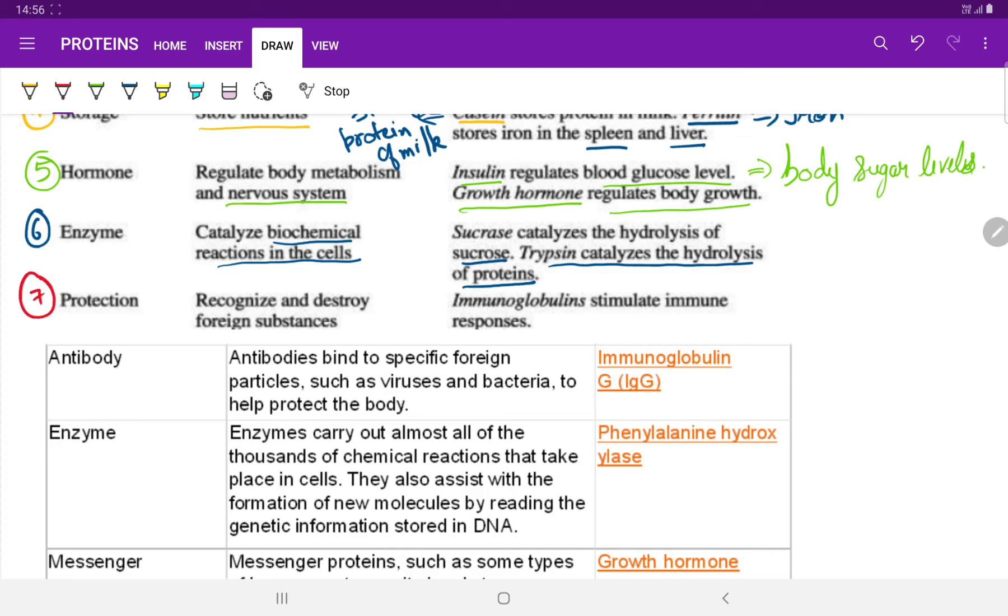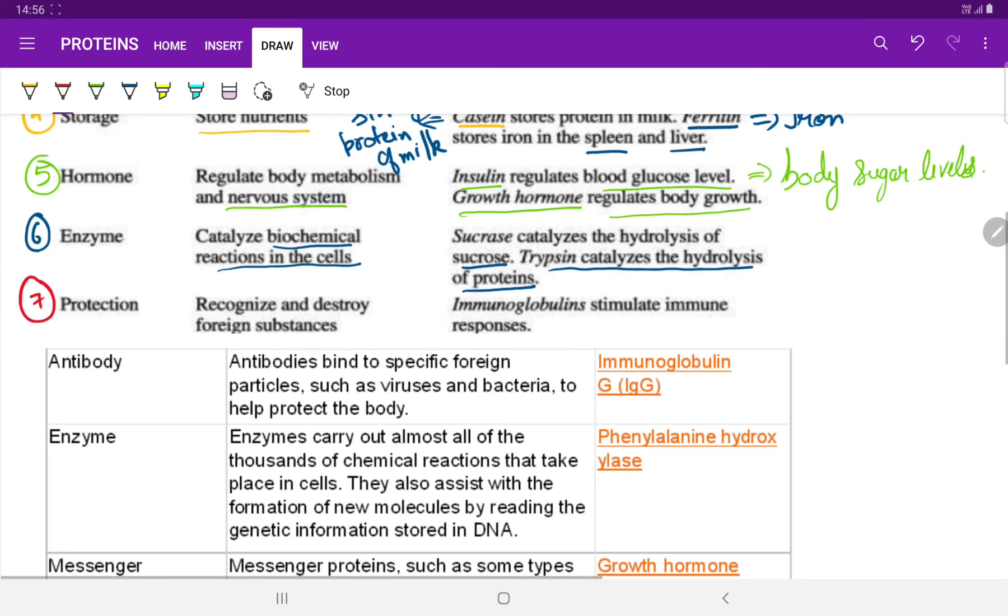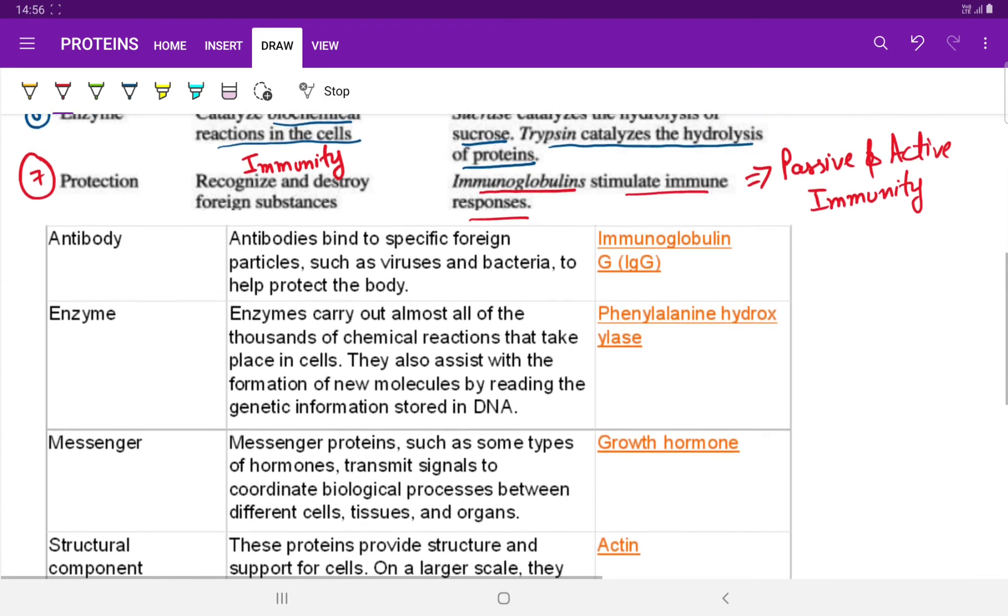The seventh one is protection. They recognize and destroy the foreign substances. The function of immunity is also performed by various types of proteins. These are mainly immunoglobulins which stimulate the immune responses. We are all familiar with the term of passive and active immunity. They all perform the function of protection, act as a first line of defense against various bacterial and viral infections. Now let us understand some of them in details.